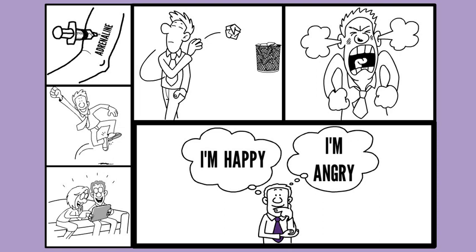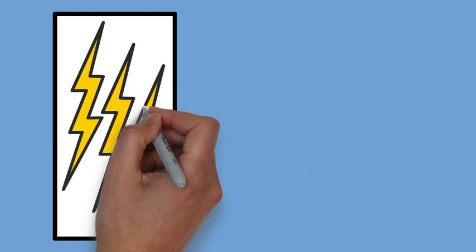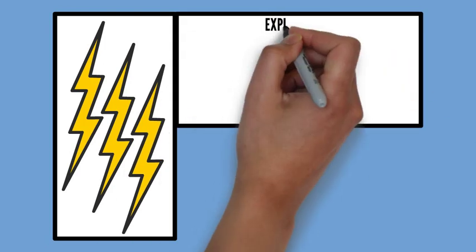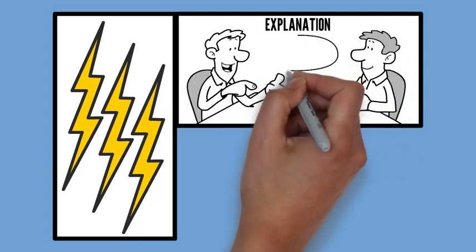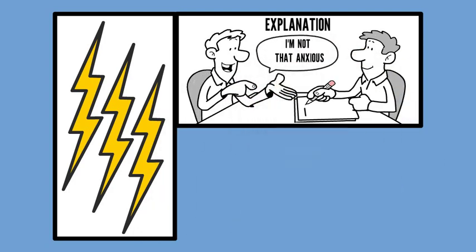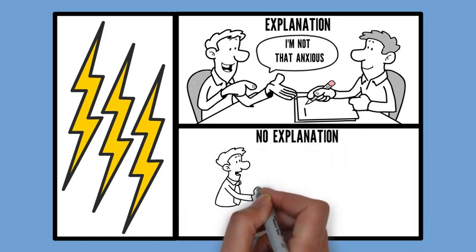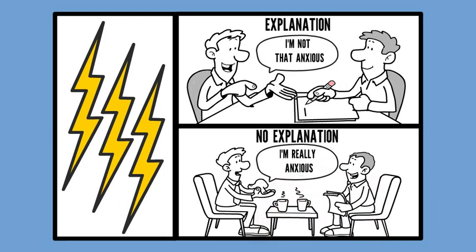Another example of the Schachter-Singer theory of emotions is a study conducted by Singer and his colleagues in which participants were exposed to a mild electric shock and then asked to report their level of anxiety. The researchers found that participants who were given an explanation for the shock, such as the need to test a machine, had lower levels of anxiety compared to those who were not given an explanation.